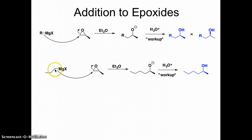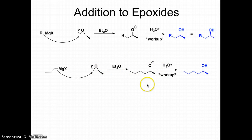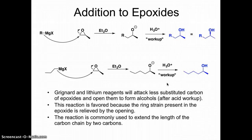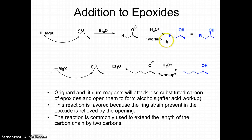Here's an example with a three-carbon chain. We open up on the least substituted side, break the bond, and put the electrons on oxygen to give an alkoxide. Then we do an aqueous acid workup to isolate the alcohol. In synthesis, a good signal that you need to do an epoxide opening is when your product contains an alcohol and you're also adding in carbons — that's when you reach for this tool.